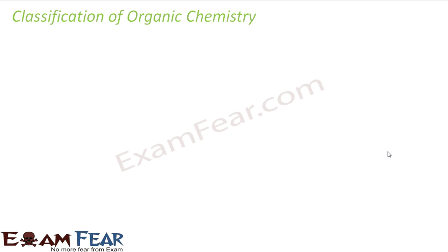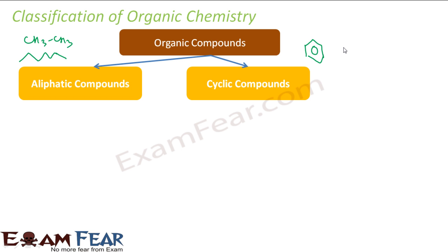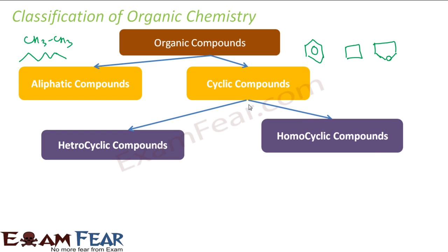Now let's start with the classification of organic chemistry. Organic compounds are classified into aliphatic and cyclic compounds. Aliphatic compounds have straight chains, for example CH3-CH3. Cyclic compounds have cycles, for example benzene, cyclobutane, or tetrahydrofuran.